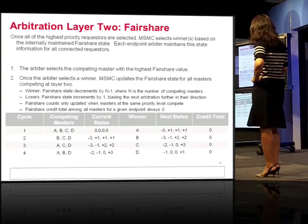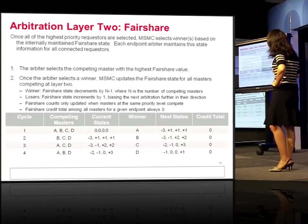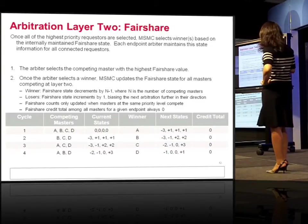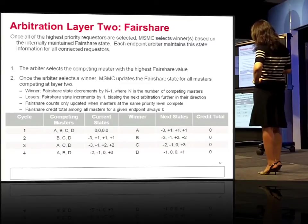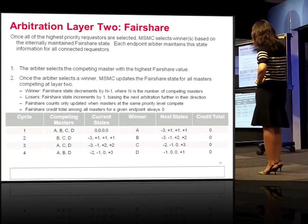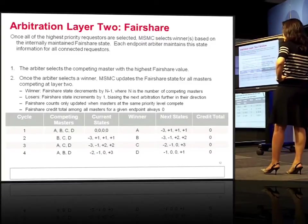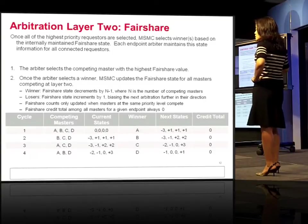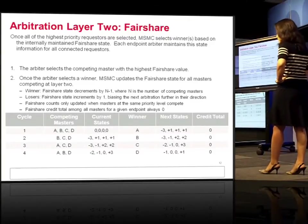The second layer is fair share. In cycle one, competing masters A, B, C, and D all have the same status — count at zero — so we use fixed priority and pick A as the winner. The counter then says A beat three other competitors, so A gets a history count of minus three and everybody else gets plus one. The total credit always sums to zero. Our counter is bounded — never beyond minus three or plus three — allowing us to implement it on silicon without unbounded counters.